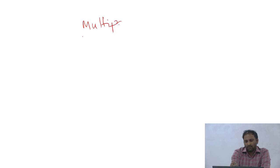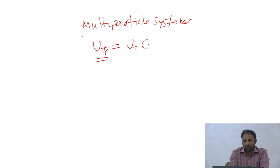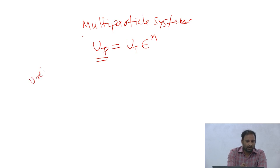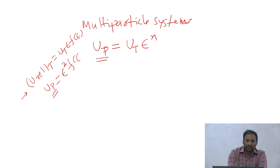Today I would like to start with a new topic which is on flow through packed beds. In the case of multi-particle systems, we derived that u_p, the particle settling velocity under hindered settling conditions, goes as u_t times epsilon to the power n. We also said that u_relative_terminal goes as u_t times epsilon times f(epsilon), and u_particle under hindered settling goes as epsilon squared times f(epsilon).